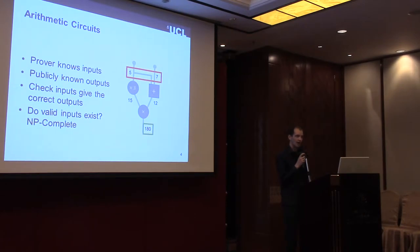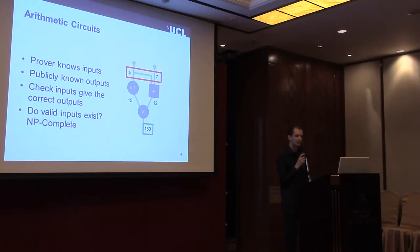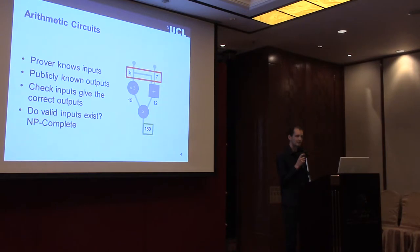We give zero-knowledge protocols for arithmetic circuits. An arithmetic circuit is a circuit made up of gates labeled with addition or multiplication. Every gate has two input wires and one output wire, and all wires take values in some field. The statement for our zero-knowledge proof is a description of an arithmetic circuit with a collection of outputs, and it's an NP-complete problem to decide whether valid inputs satisfying the circuit and giving those outputs actually exist. The prover's witness is a set of valid input wires for the arithmetic circuit.